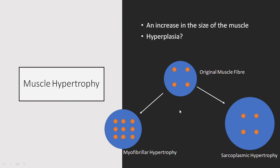From some sort of resistance training we can have myofibrillar hypertrophy, which is essentially where these myofibrils increase in number. This expands the total size of the muscle fiber, and across all muscle fibers we eventually get an increase in the size of the muscle belly.